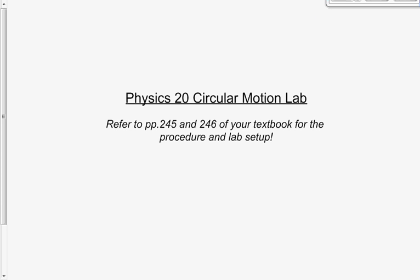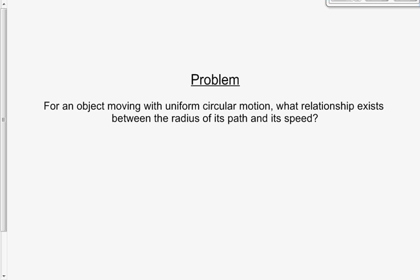We're going to switch gears a little bit today and perform a lab where we're trying to find a relationship between the radius of an object's path as it goes around in a circle and the speed at which it travels. Radius and speed. There's a whole bunch of variables in play when we're talking about an object moving in a circle. F equals mv squared over R — that's the basic equation. V and R are certainly related to each other, and we want to find out what that relationship looks like. The problem, in the form of a question: for an object moving with uniform circular motion at a constant speed, what relationship exists between the radius of its path and its speed?